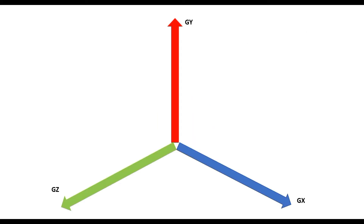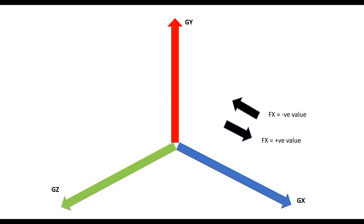A point load is nothing but a pressure load that is considered to act on an infinitesimally small area. With respect to STATPRO, the point load is defined with respect to the global axis system. A load directed along the positive direction of global X is defined as Fx with a positive value, and the one in the opposite direction as Fx with a negative value. Similarly, loads are defined as Fy and Fz along the global Y and global Z directions respectively, with sign determined by direction relative to the positive global axis.